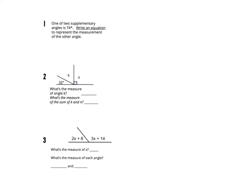For question number one, one of two supplementary angles is 74 degrees. Write an equation to represent the measurement of the other angle. Drawing a picture, we have a supplementary angle — a straight line — where one angle measures 74 and we're finding the other. I would say 74 plus X equals 180, and then simply do 180 minus 74, which gives us 106 degrees.